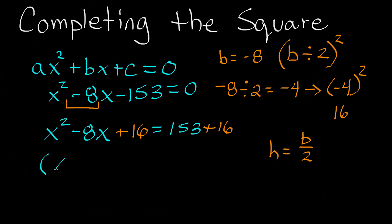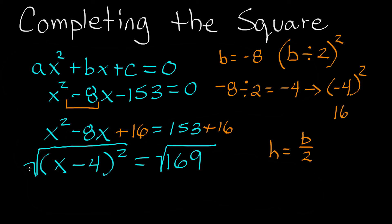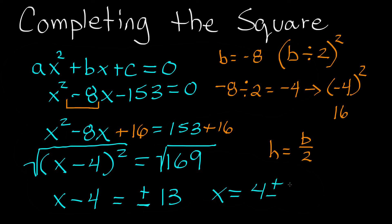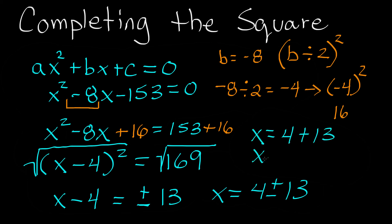Now we know the left hand side equals x minus 4 squared, and 153 plus 16 equals 169 on the right hand side. Taking the square root of both sides, the left side becomes x minus 4, and the right side is plus or minus 13. Adding 4 to both sides gives x equals 4 plus or minus 13. So x equals 4 plus 13 equals 17, and x equals 4 minus 13 equals negative 9.